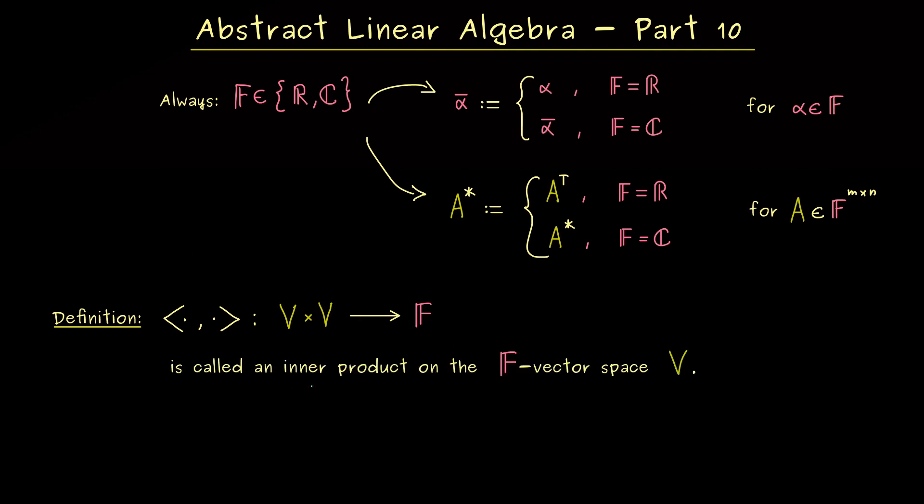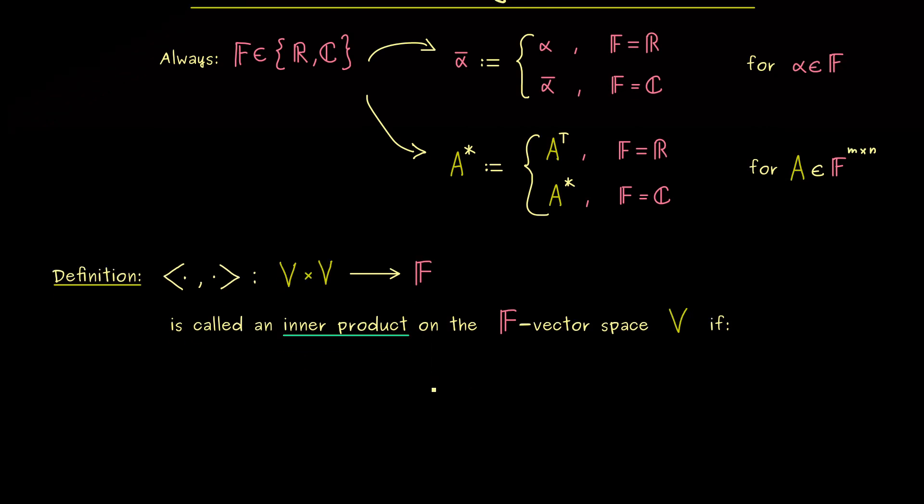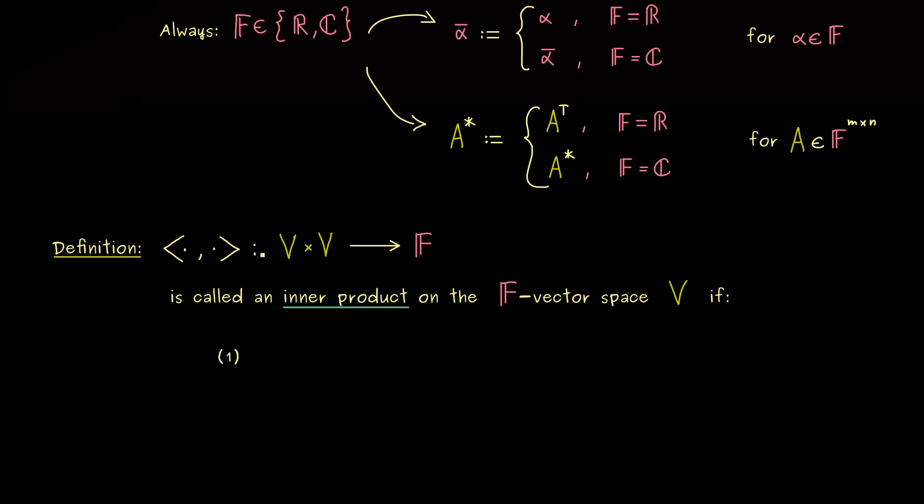And now this map here is called an inner product on V if it satisfies three properties. And indeed I can tell you, they are not hard to remember at all. The thing you have to keep in mind for that is that with an inner product we want to measure angles and lengths. And there please note, just the abstract vector space V does not have any geometry at all. It only has the algebraic structure, scaling and addition by definition. And that is the reason inner products are so helpful, because they give geometry to the vector space.